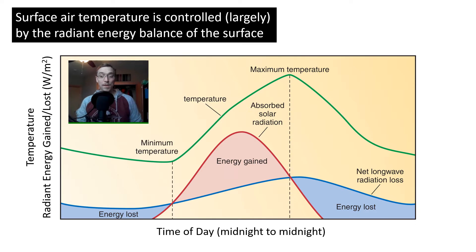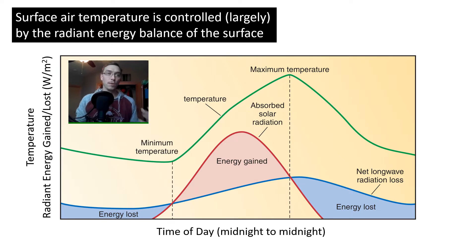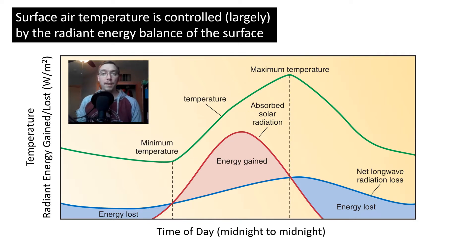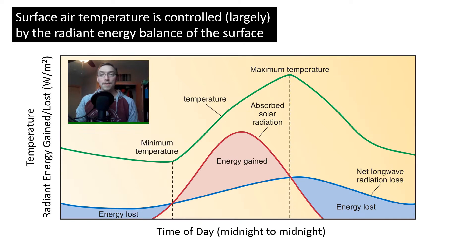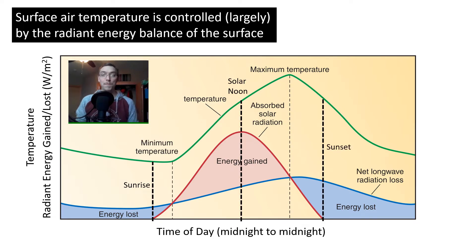Energy gained refers to inputs of insolation, while energy lost represents energy lost through long-wave radiation. The minimum and maximum temperatures are expressed by the intersection of the green line and the vertical black dashed lines. At the minimum temperature, the energy lost and energy gained lines intersect. Likewise, we see this at the maximum temperature point as well. Interestingly, these minima and maximum points don't line up with sunrise, solar noon, and sunset.